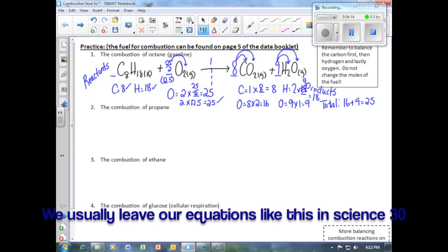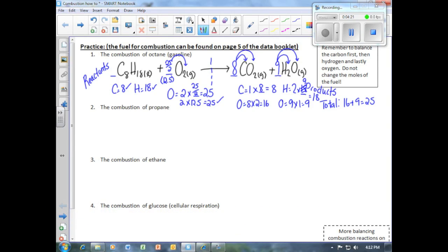For Science 30, we can leave our coefficient of twenty-five over two, or twelve point five, as is. Or you can multiply the entire equation by two, and that way we can get rid of the fraction.